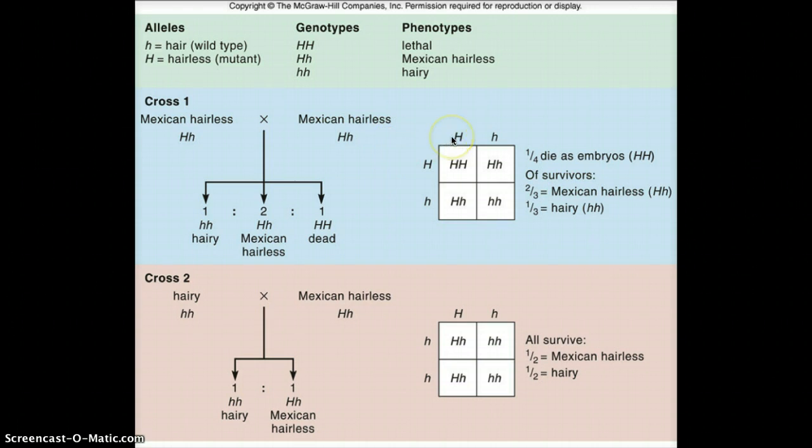So when you cross two heterozygotes, you get one homozygous dominant. You get two heterozygotes. And you get one homozygous recessive.